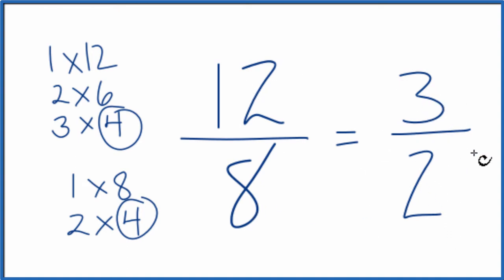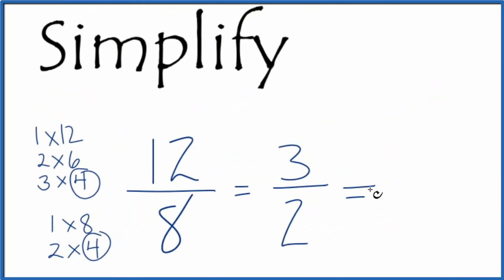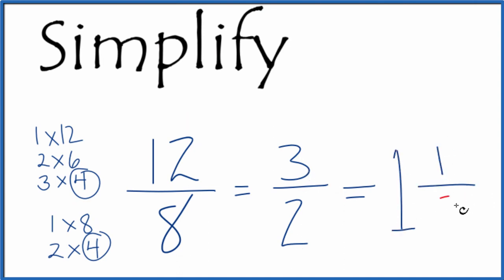This is an improper fraction — the numerator is bigger than the denominator — so we could convert this to a mixed fraction. 2 goes into 3 one time with 1 left over, so 1 half. So 1 and 1 half is equivalent to 3 over 2, or 12 over 8.